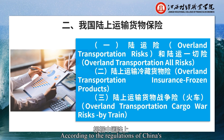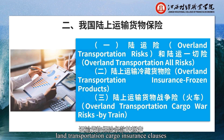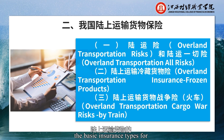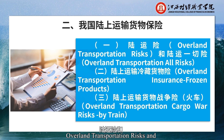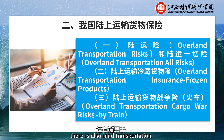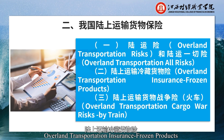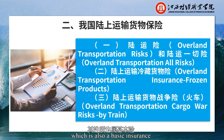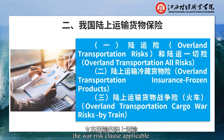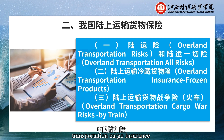According to the regulations of China's land transportation cargo insurance clauses, the basic insurance types for land transportation cargo are divided into two types: land transportation insurance and land transportation all-risk insurance. In addition, there is also land transportation refrigerated cargo insurance applicable to refrigerated goods by land, which is also a basic insurance. In the additional insurance, in addition to the war risk clause applicable only to railway transportation, the additional insurance in marine transportation cargo insurance also applies to land transportation cargo insurance.